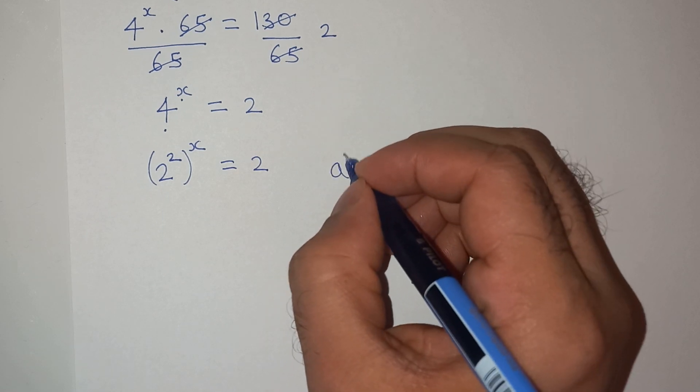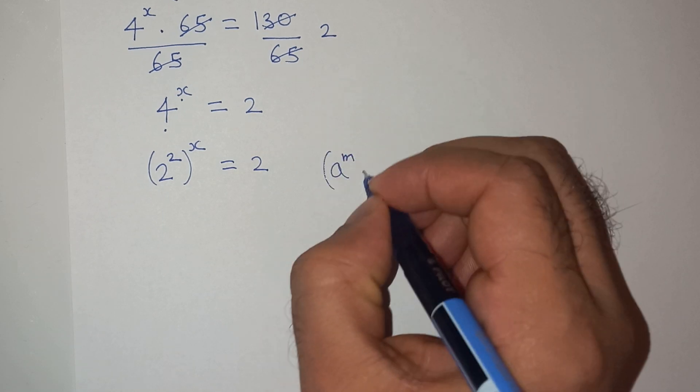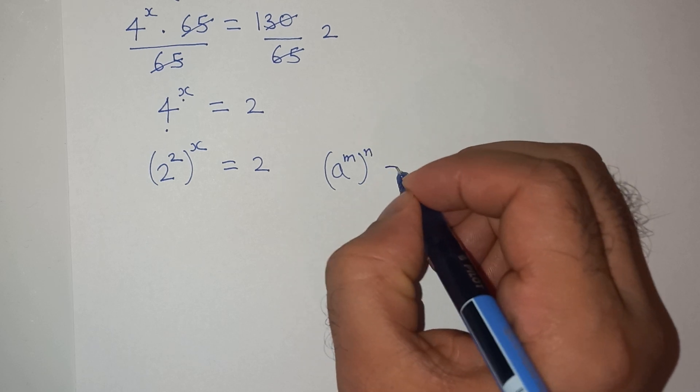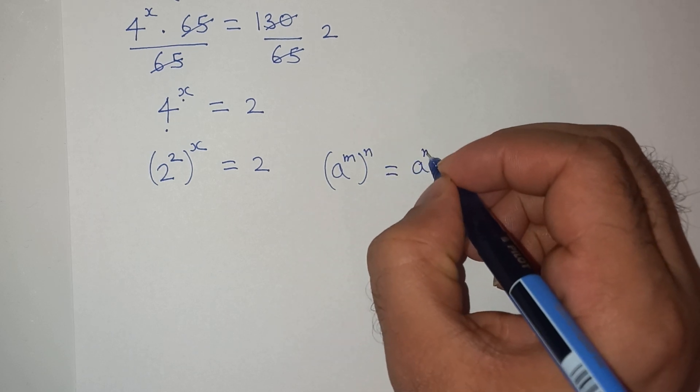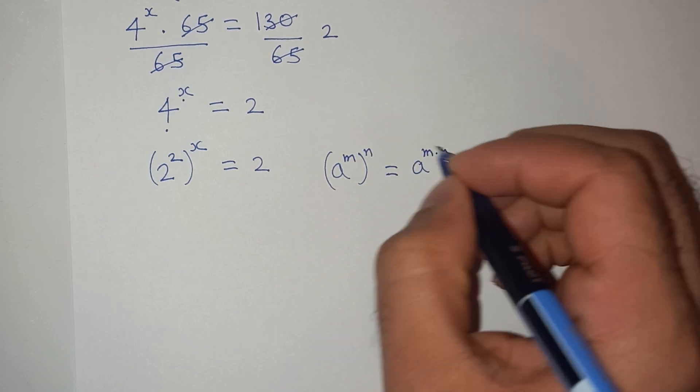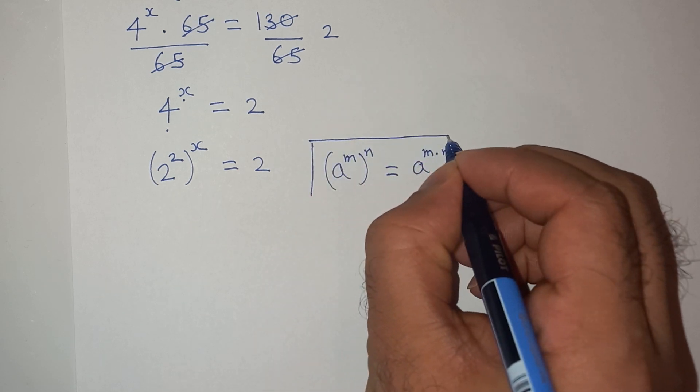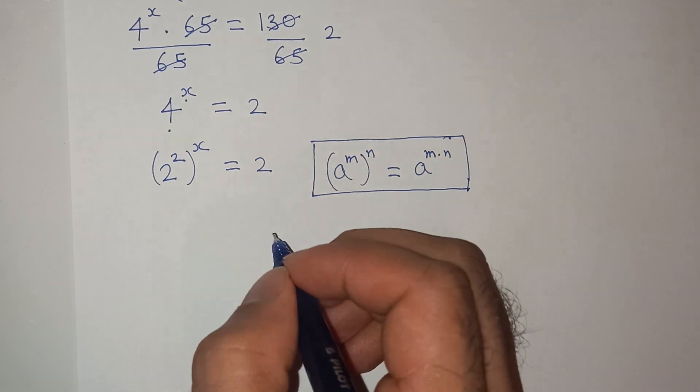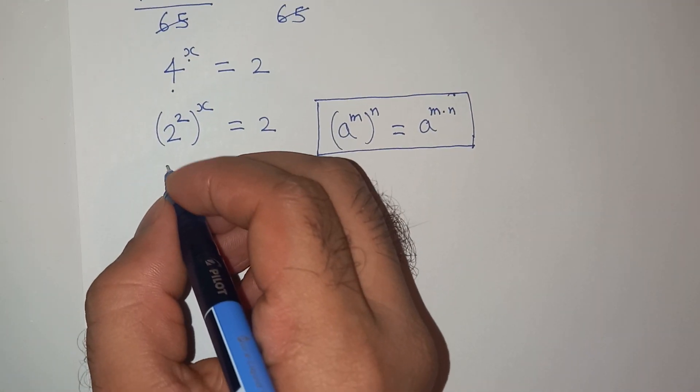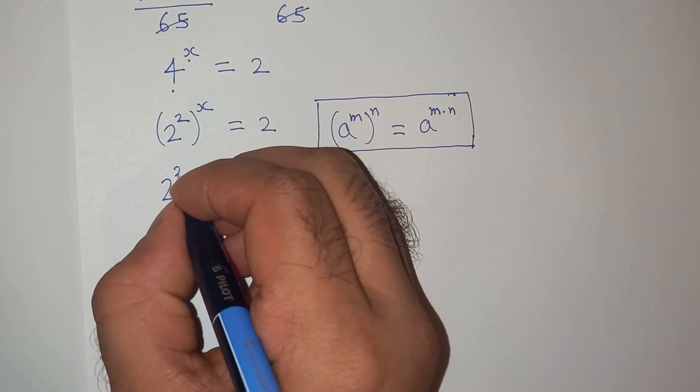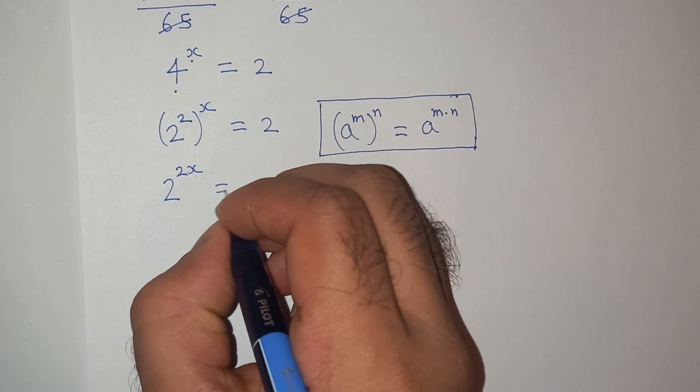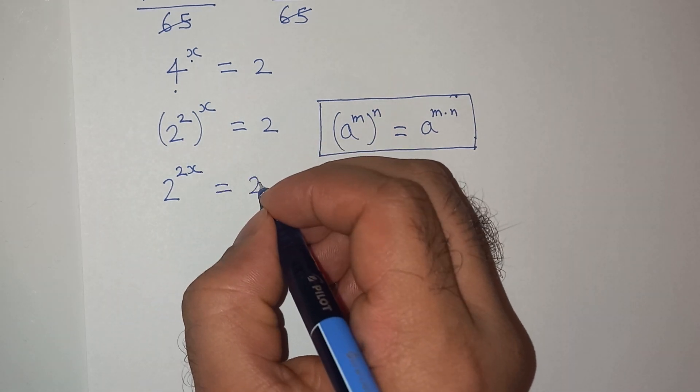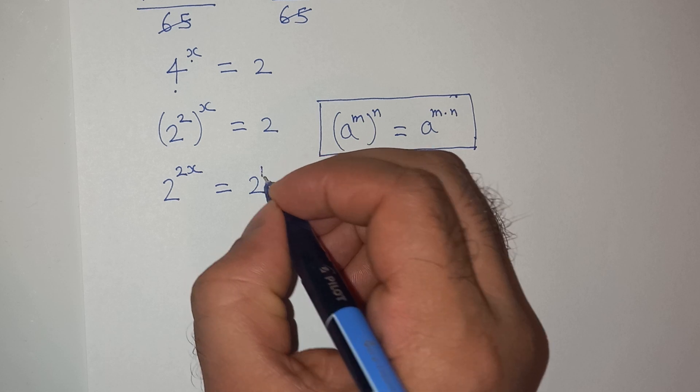We know as per this exponential rule which is a power m power n equals to a power m multiplied power n. So, we can write this as 2 power 2x equals to 2 and this 2 is same as 2 power 1.